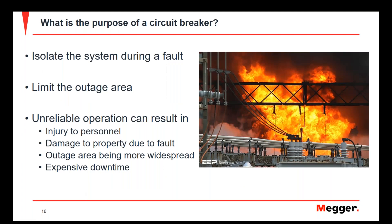What is the purpose of a circuit breaker in a power distribution system? We want it to isolate a fault whenever it occurs, to limit damage to the system during that fault condition. It also limits the outage area and sectionalizes that part of the system so that more of your operation isn't impacted by the fault. It's really important that we test and maintain this part of the system, because if it's unreliable, it can cause injury to personnel, damage to property, or a more widespread outage than desired — and all of these lead to more expense.